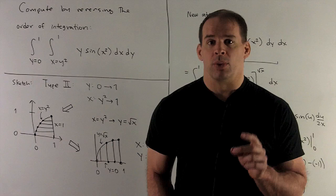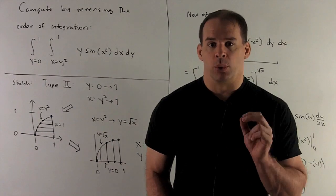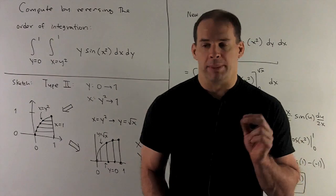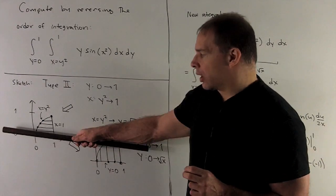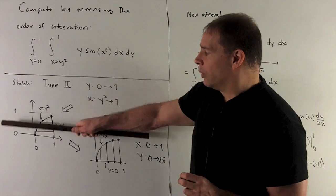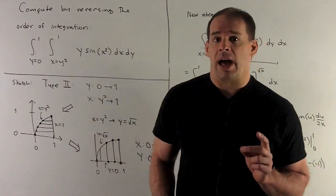First step, we have to sketch our region. We have y going from 0 to 1, so I take the line y equals 0 (the x-axis), the line y equals 1, and our region will be between those two lines.